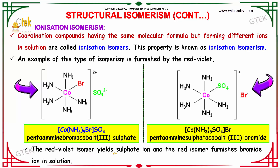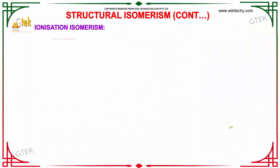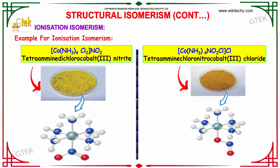The red-violet isomer furnishes sulfate ion and the red isomer furnishes bromide ion. This one is red-violet and this one is red. So the formula is Co(NH3)5Br·SO4, named pentaamminebromocobalt(III) sulfate. Over here, the name is pentaamminesulfatocobalt(III) bromide. Here is the typical example of ionization isomerism.